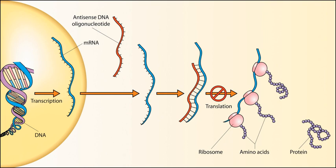Ambisense: A single-stranded genome that contains both positive sense and negative sense is said to be ambisense. Bunyaviruses have three single-stranded RNA fragments containing both positive sense and negative sense sections. Arenaviruses are also ssRNA viruses with an ambisense genome, as they have two fragments that are mainly negative sense except for part of the 5' ends of the large and small segments of their genome.